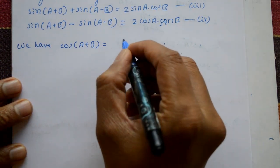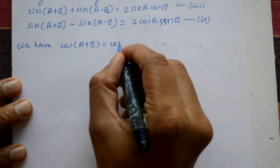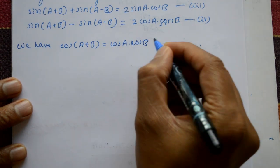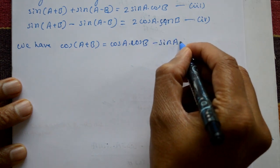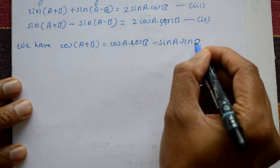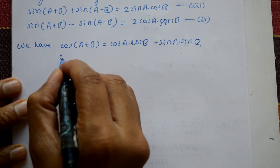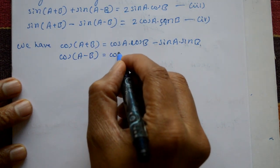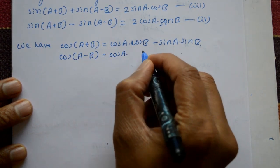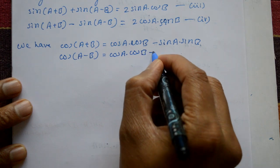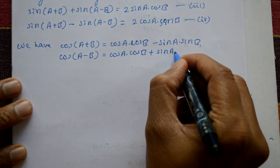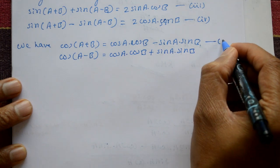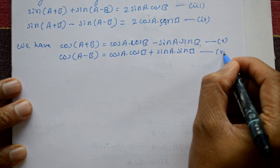We have two more formulas: cos(a + b) = cos a · cos b − sin a · sin b — equation number five. And cos(a − b) = cos a · cos b + sin a · sin b — equation number six.